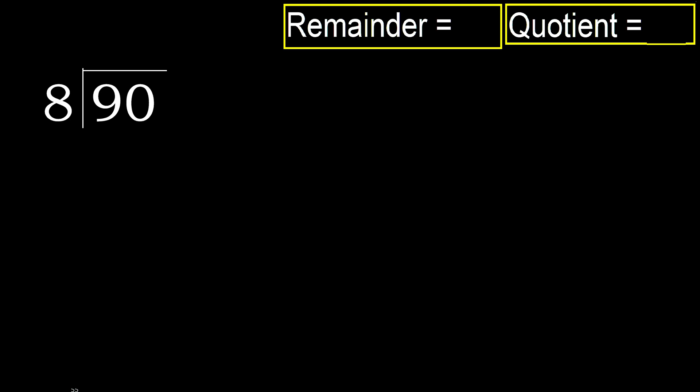90 divided by 8. Starting with 9 — 9 is not less, so we work with 9. 8 multiplied by which number is nearest to 9 but not greater?